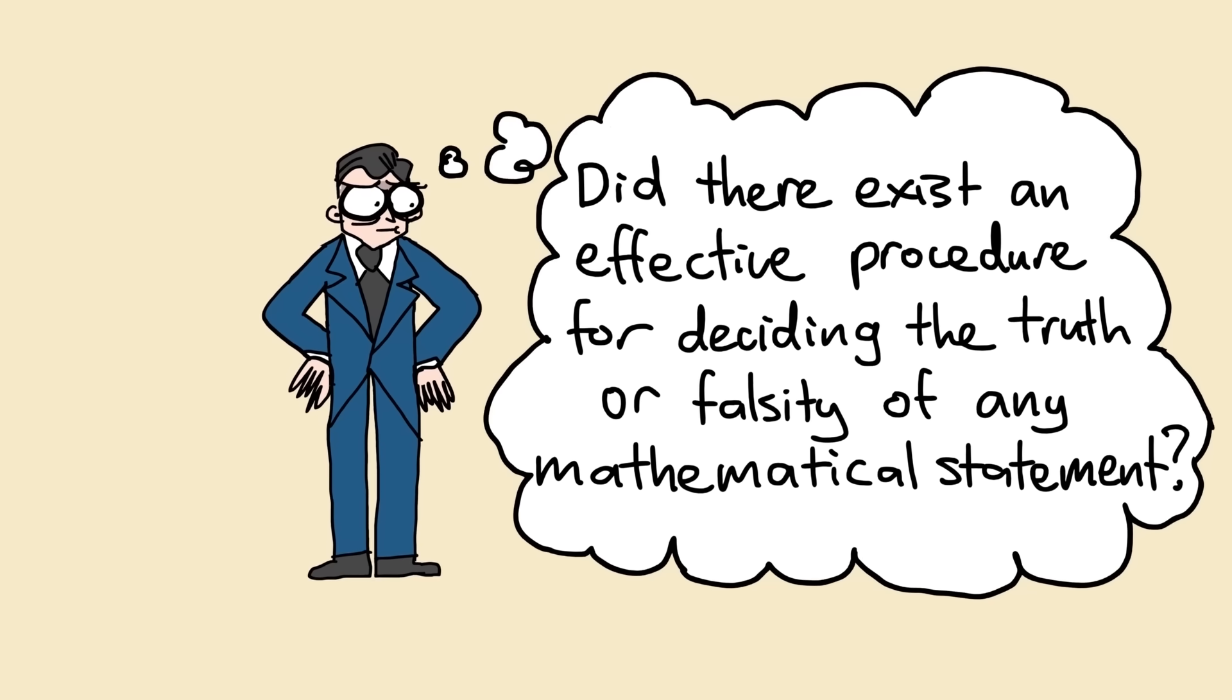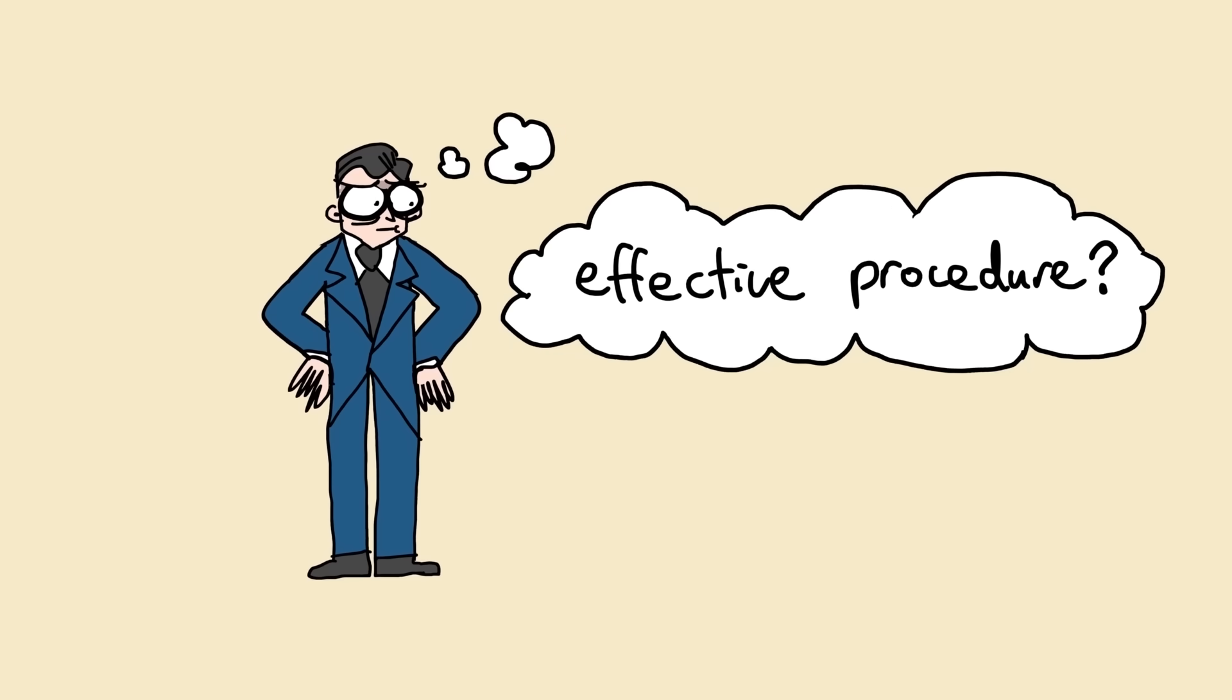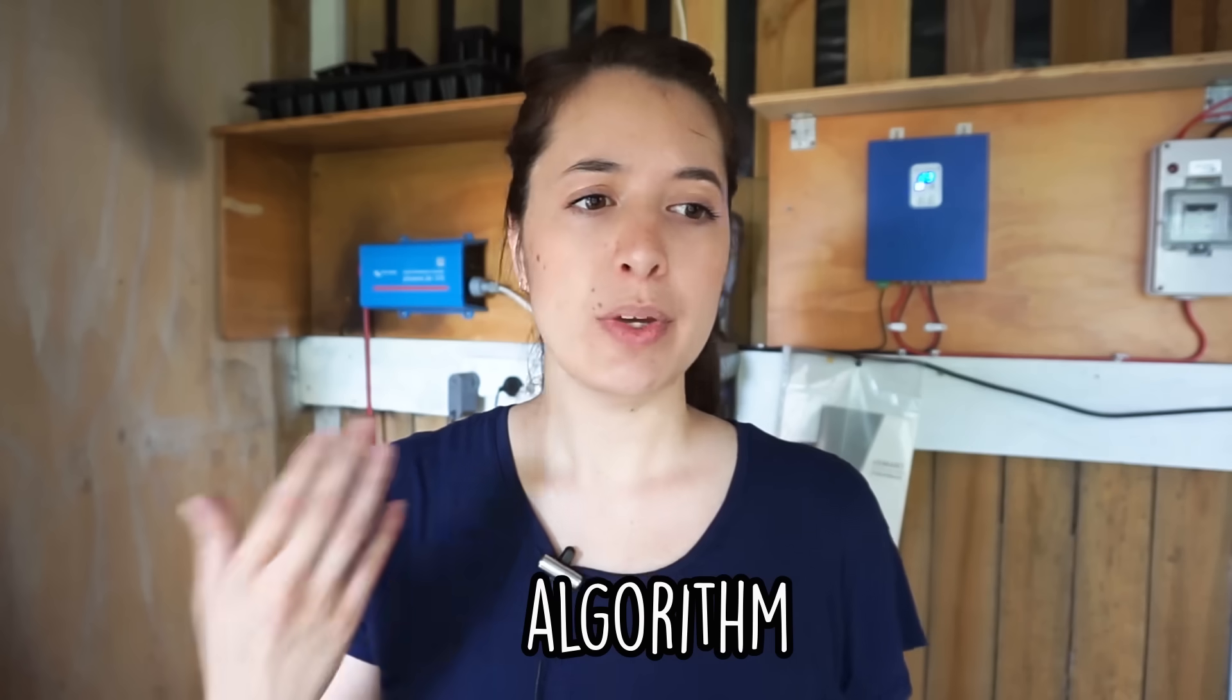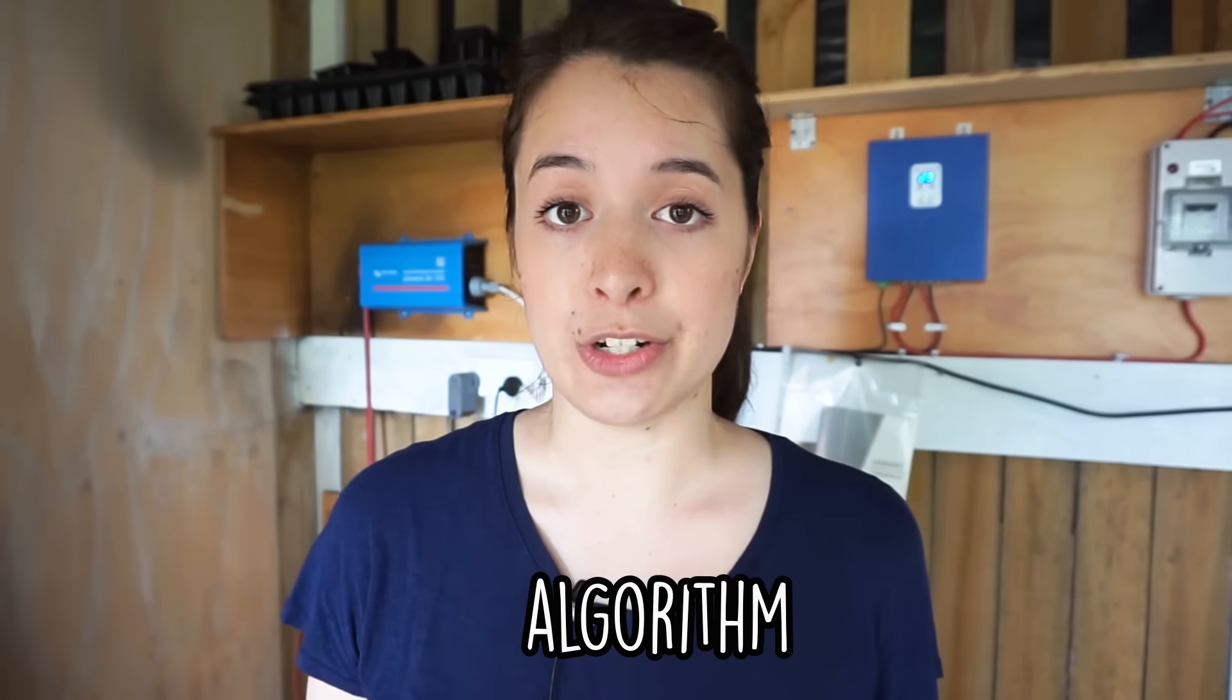But Turing saw a slight problem with the question. What exactly was an effective procedure? Today, an effective procedure is considered to be an algorithm, some step-by-step set of instructions that you can follow without using any real thought or intuition. But this was back in the 30s and the idea of an algorithm was still vague and ill-defined. We're used to the concept now because they're fundamental to how computers work. But computers didn't exist back then, or at least not as we know them today.